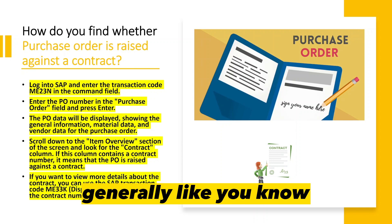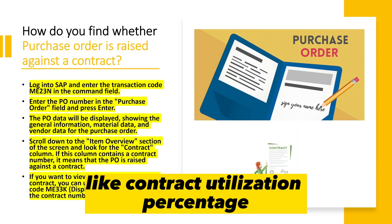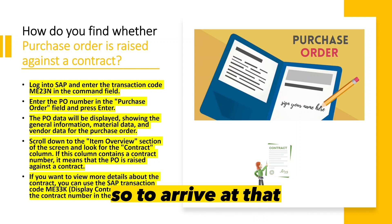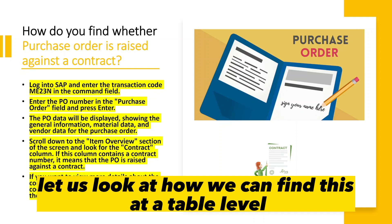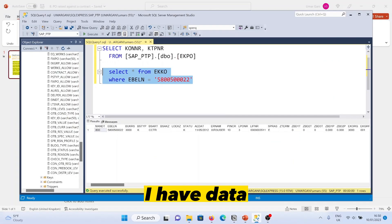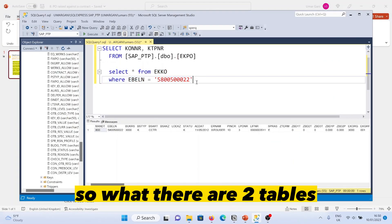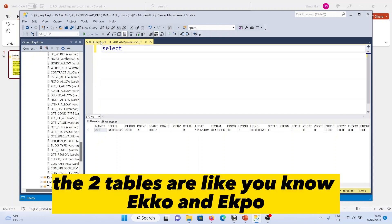For example, if you want to calculate a KPI like contract utilization percentage, going to the table level is more appropriate. There are two tables relevant here: EKKO and EKPO. Let me go to the sample SQL I have.